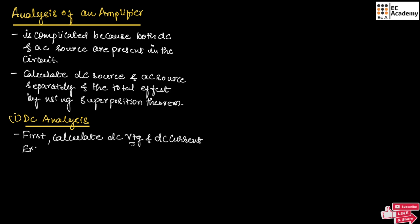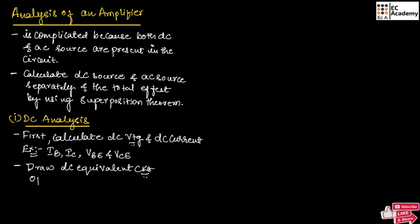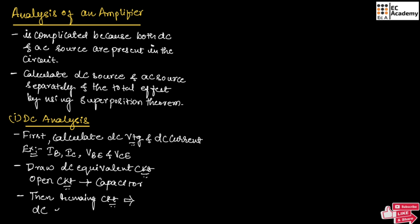For example, we need to calculate the currents IB, IC, and the voltages VBE and VCE, and so on. To draw the DC equivalent circuit, we need to open-circuit all the capacitors. The remaining circuit is then known as the DC equivalent circuit.